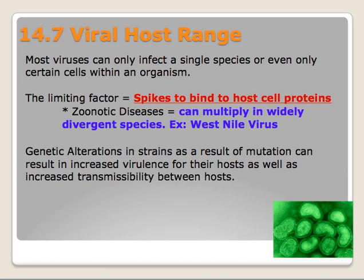So exactly how does that work? Well, there's a major limiting factor: those glycoproteins, or the spikes, that bind to the host cell proteins. Zoonotic diseases — those that attack animals — can multiply in sometimes widely divergent species. One example is West Nile virus, which we hear about frequently being in birds, in mosquitoes, and then in humans.